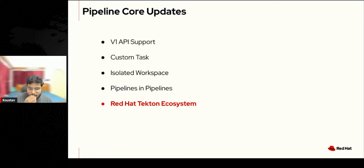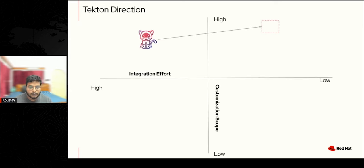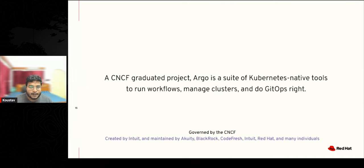Red Hat is launching the Tekton Ecosystem — a curated, supported collection of tasks and pipelines from Red Hat and partners, aiming to make integration effort lower. Overall, from Tekton Resolvers to Tekton Results to Pipeline as Code, all these features share the same goal: high customization scope with lower integration effort.